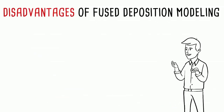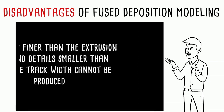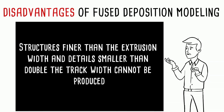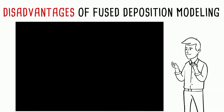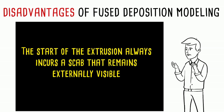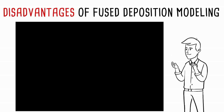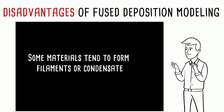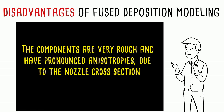Disadvantages of fused deposition modeling: first, structures finer than the extrusion width and details smaller than double the track width cannot be produced. Second, the start of the extrusion always incurs a scab that remains externally visible. Third, some materials tend to form filaments or condensate. Finally, the components are very rough and have pronounced anisotropies due to the nozzle cross-section.